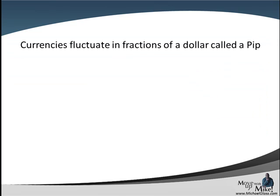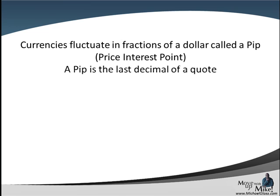So let's get to that. Currencies fluctuate in fractions of a dollar called a PIP. PIP stands for Price Interest Point. A PIP is the last decimal in a quote. So let's go back to that 1.2665.